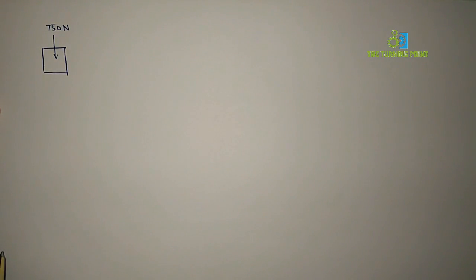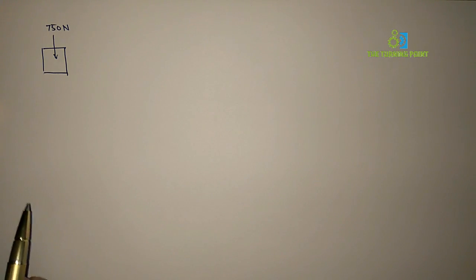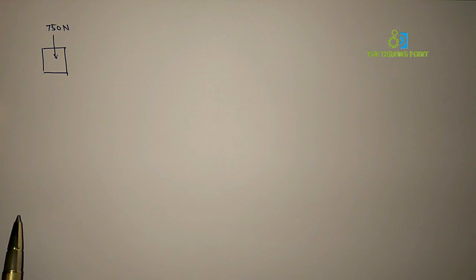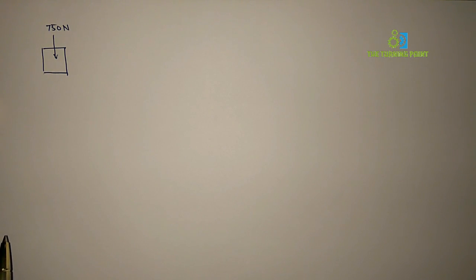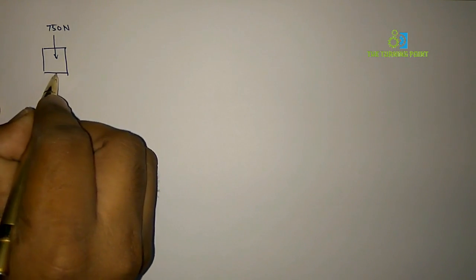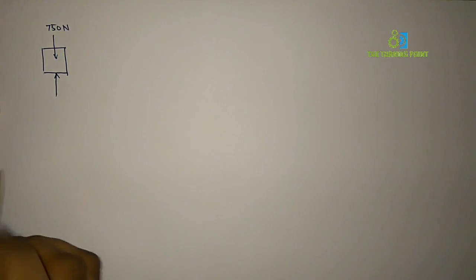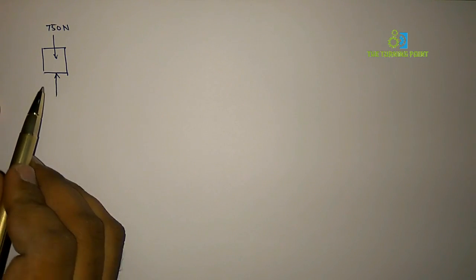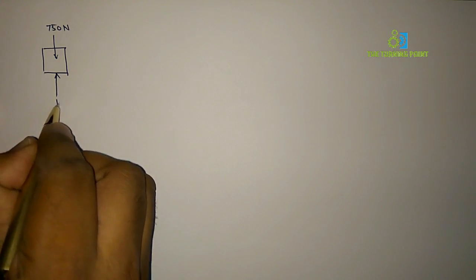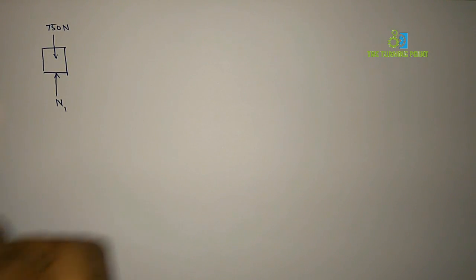Remember, the weight always acts vertically downwards through the center of gravity. This is the given weight for the crate. The crate is not able to move in the downward direction because there is a cart — that means there is a restriction. Whenever there is a restriction, in the opposite direction perpendicular to the surface, we represent a reaction. As it is normal to the surface, let us denote it as N1, the normal reaction.